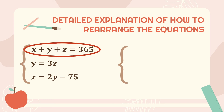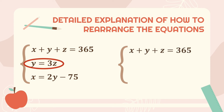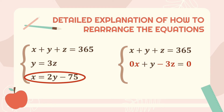We'll put a zero in front of any missing variables. The first equation already has X, Y, and Z on the left and the constant on the right, so it is arranged properly. In the second equation, X is missing, so we give it a coefficient of 0. We move 3Z to the left by subtracting, and since there is no constant, we write zero on the right. For the third equation, we move 2Y to the left by subtracting and add 0Z for the missing Z. Our arranged system is: X + Y + Z = 365, 0X + Y − 3Z = 0, and X − 2Y + 0Z = −75.